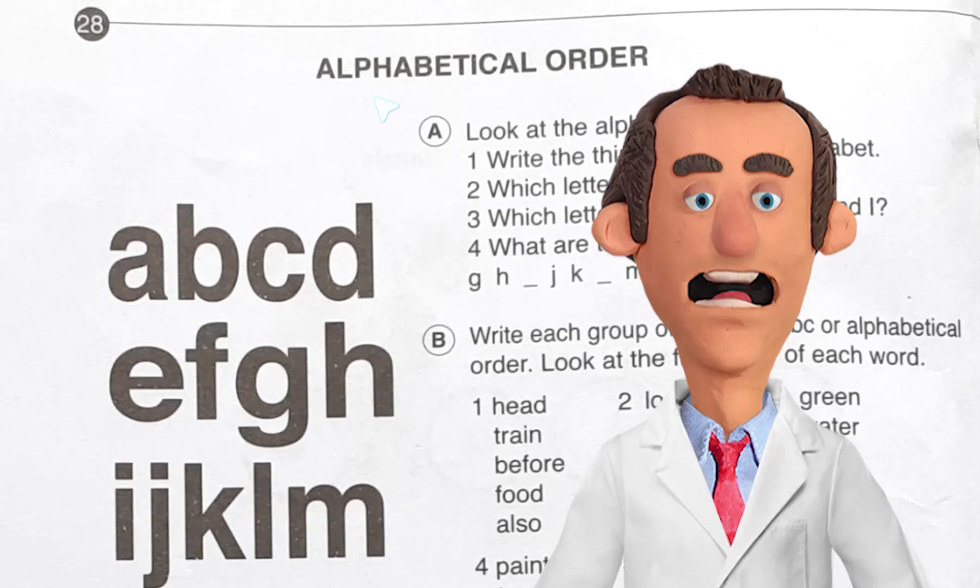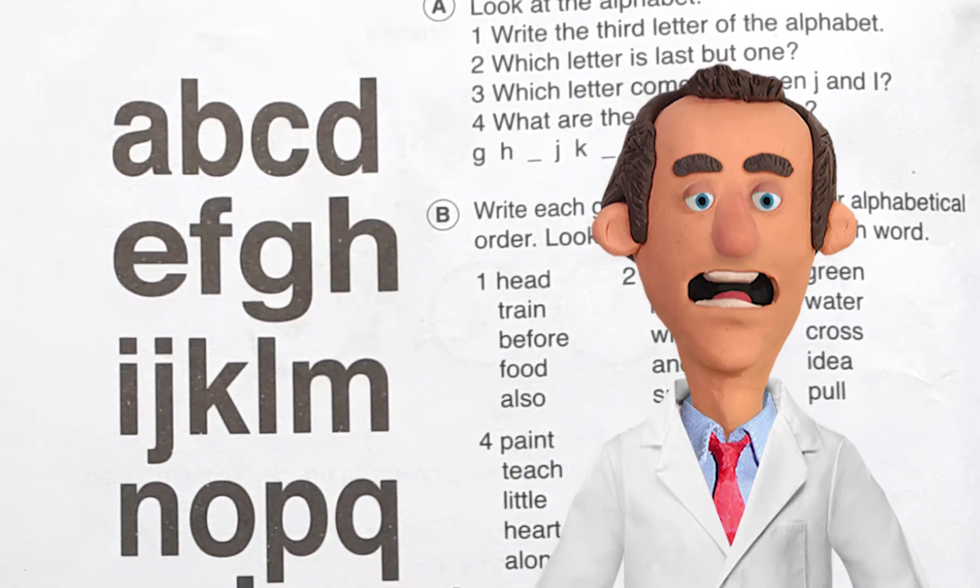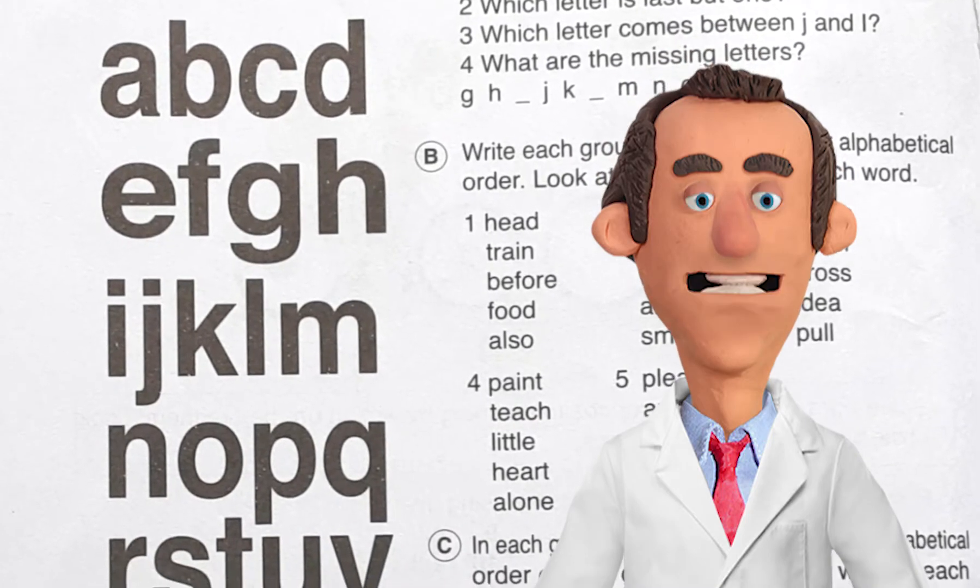Hello everybody, hope you're fine. Today again I am with you and I'm going to discuss Junior English Book 2, page number 28. Today's topic is alphabetical order. What is alphabetical order? Alphabetical order is we have to follow the order according to the alphabet, what we have learned at first in our childhood.